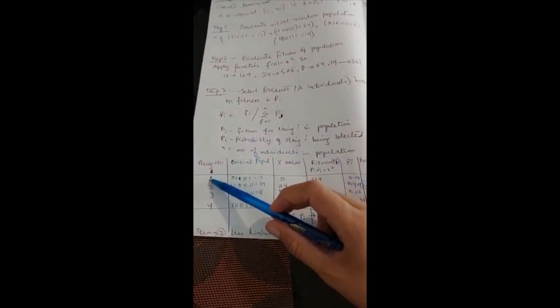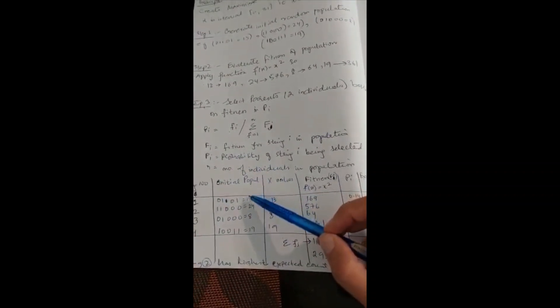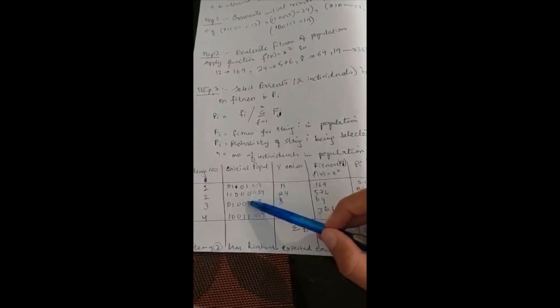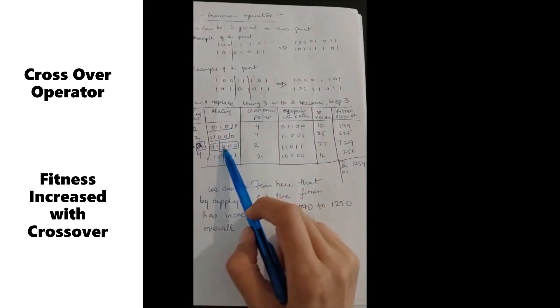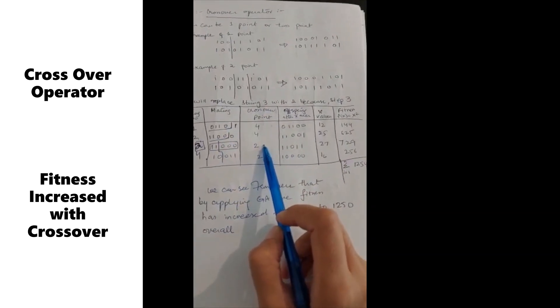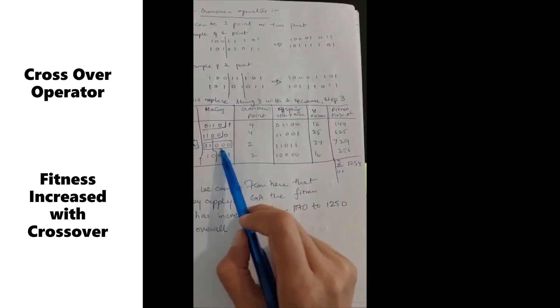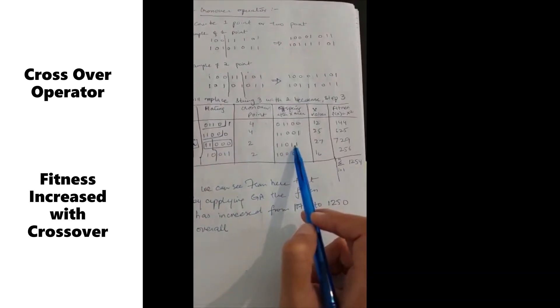I have applied all the strings. String number 1, 2, 3, 4. Initial population I have written here.